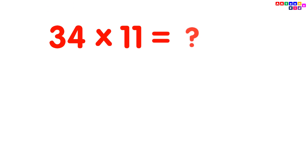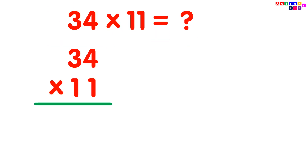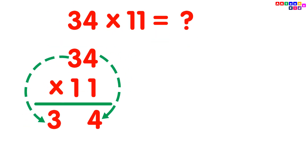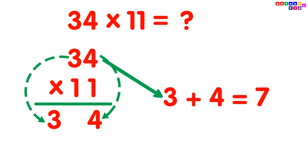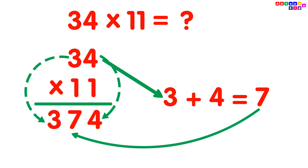34 multiplied by 11. Simply write the digits 3 and 4. Then add the digits: 3 plus 4 equals 7. Put the 7 between digits 3 and 4, and you will get your answer 374.